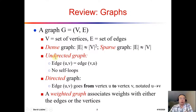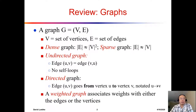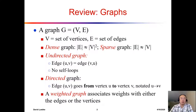For the undirected graph, the edges are the same no matter which direction — the edge from u to v is the same as the edge from v to u. For the directed graph, we emphasize the direction, so we say the edge (u, v) is an edge from vertex u to vertex v. For each edge in a graph, we can assign a weight. A weight can be 0 or 1 indicating whether there is an edge between u and v, or it can be a specific value, for example 10, which would be the weight of that edge.